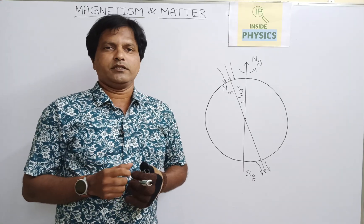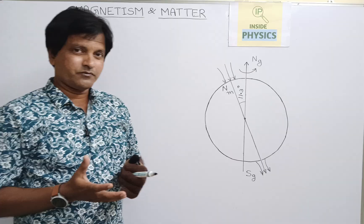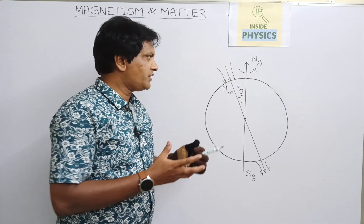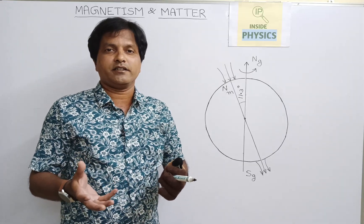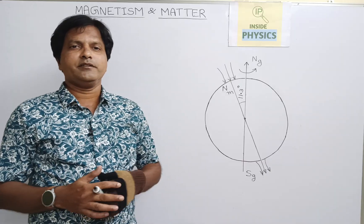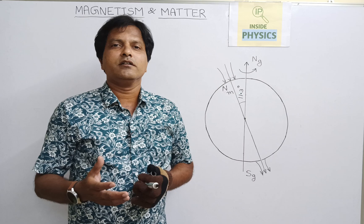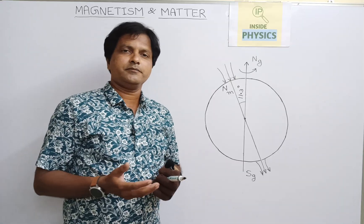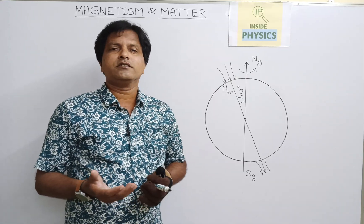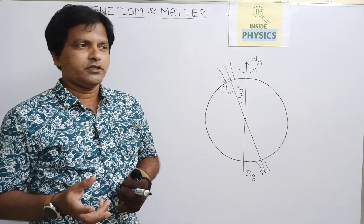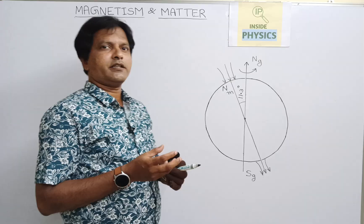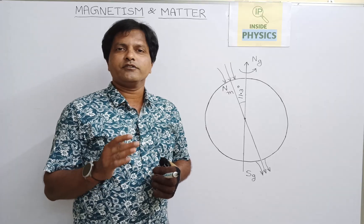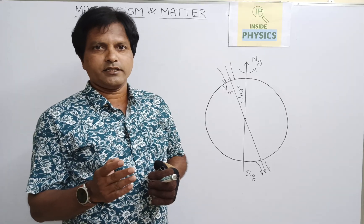Our question is: why does the earth behave like a magnet? Does it have any magnet inside? If it has a magnet inside, who put the biggest magnet inside the earth? Nobody. In the previous days everybody thought it might have a magnet inside, but that is not true. The reason for the magnetic field and magnetism around the earth is a convective movement of the metallic fluids or molten metals inside the earth's crust.